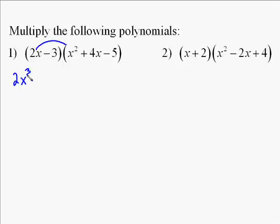So in this case, we multiply the 2x times the x squared, which gives us 2x to the third power. And then the 2x times the 4x, which gives us 8x squared, because x times x is x squared. And then the 2x times the negative 5, which gives us a negative 10x.